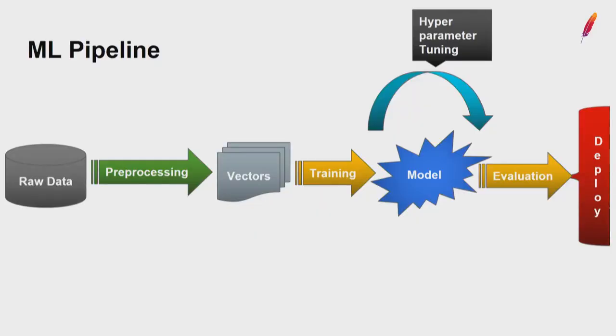At the end, the quality of the built model can be evaluated before deploying to production. We have many different metrics to estimate the model — for binary classification, regression, clustering, etc. All these steps are distributed in the Apache Ignite ML module.